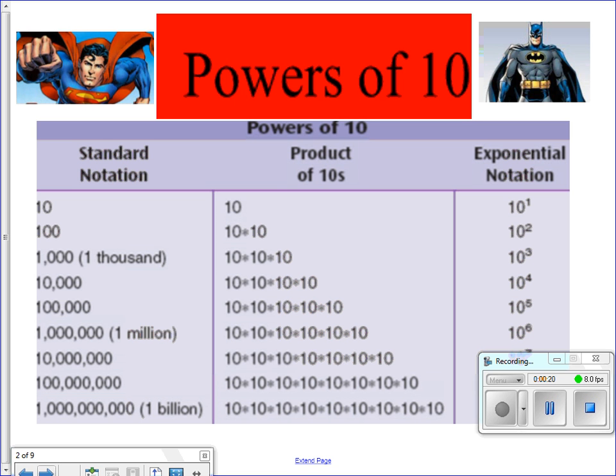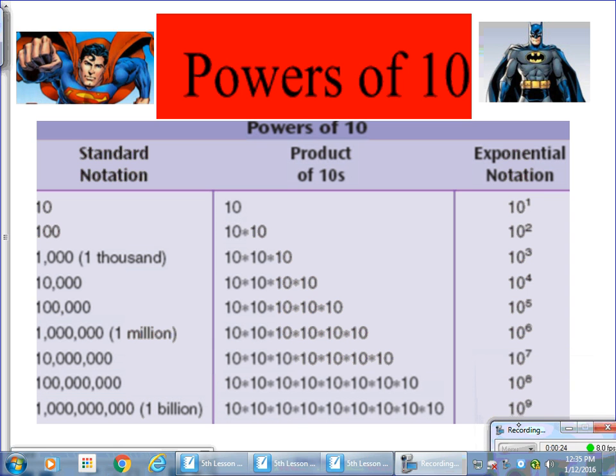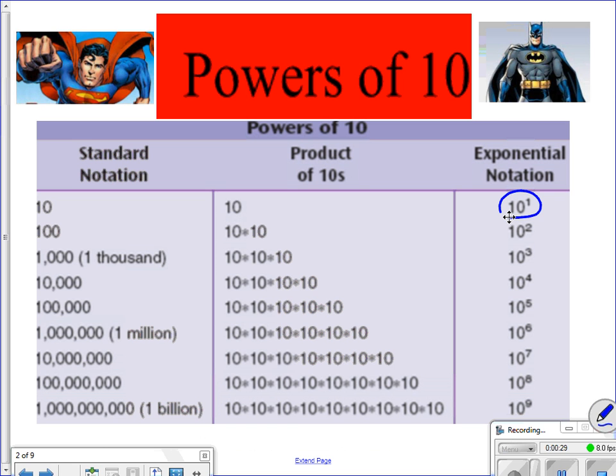And some things I want you to keep in mind, it's easy. Just watch here. 10 to the first power right here, because it has 1 as an exponent, the product is 10, we have 1 zero in the answer.